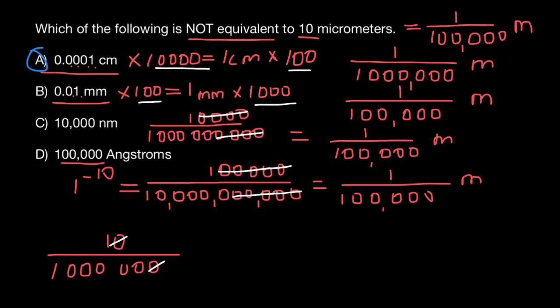So the only number which is not equivalent to 10 micrometers is option A, which equals one micrometer. All the rest equal 10 micrometers. That's all for today — subscribe and see you in the next video. Goodbye.